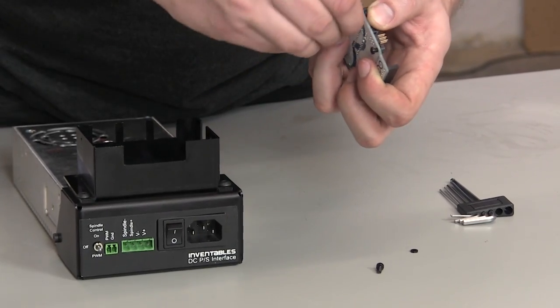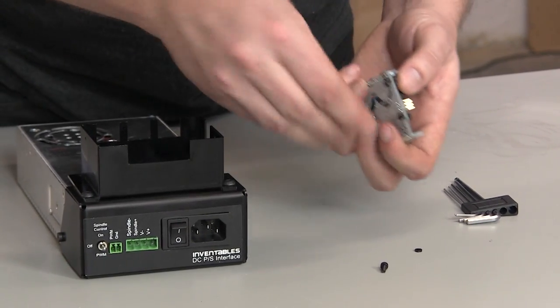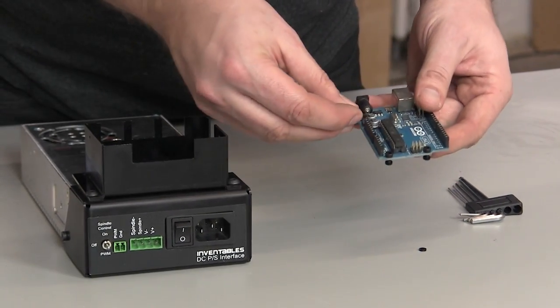Thread them under the screws by hand from the bottom side of the board and make sure that a few threads of the screw are showing.